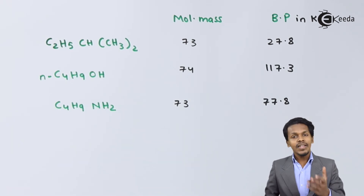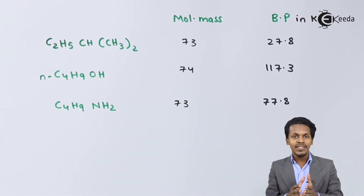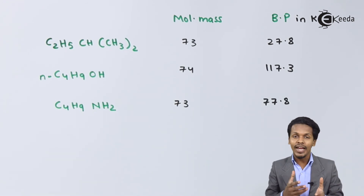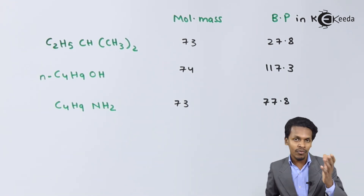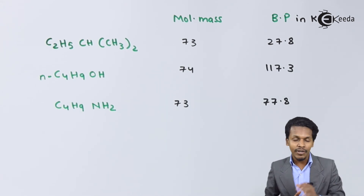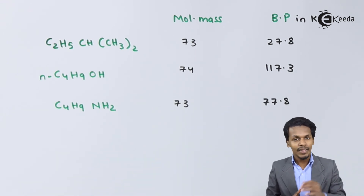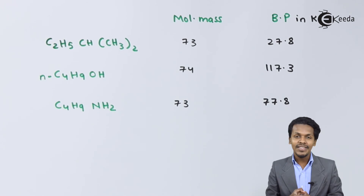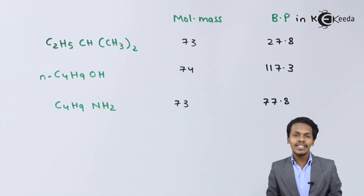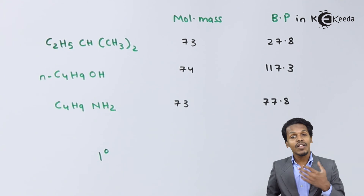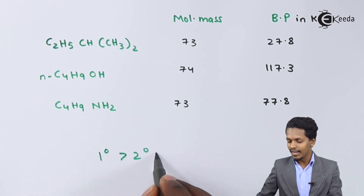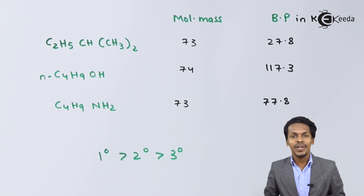Comparing primary, secondary, and tertiary amines: primary amines can form more intermolecular hydrogen bonds, so they have the highest boiling points. Secondary amines have one fewer hydrogen atom on nitrogen compared to primary amines, so they form less hydrogen bonding. Tertiary amines have no hydrogen atoms attached to nitrogen, so they don't form hydrogen bonding at all. Therefore, primary amines have the highest boiling point, followed by secondary, then tertiary amines.